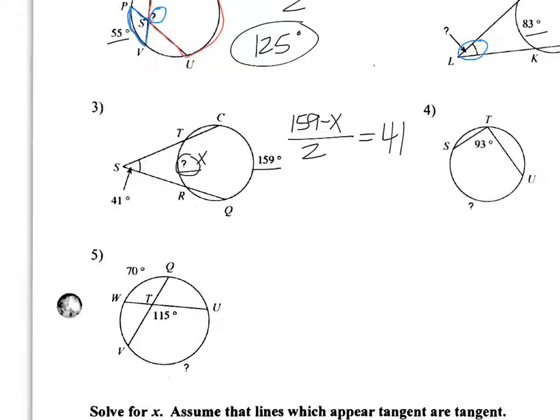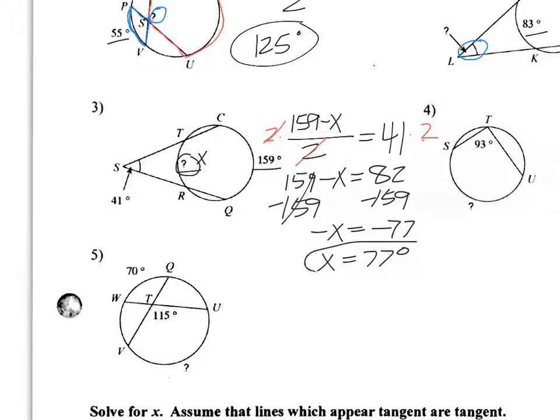Okay, so to solve this equation, pay real close attention. I'm going to multiply both sides by two. So that's going to get rid of those twos. It's going to leave 159 minus x equals 82. Then I'm going to subtract 159 from both sides. That's going to leave negative x. So 82 minus 159 is negative 77. So then that means x would be 77. Can't have a negative angle. So x is 77.